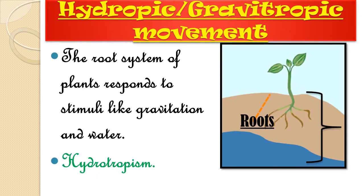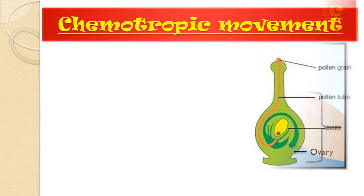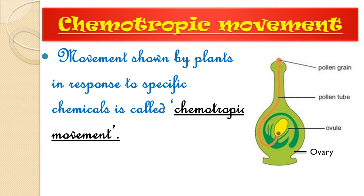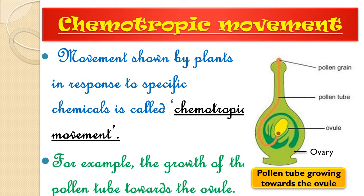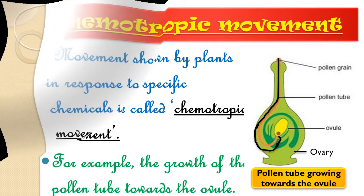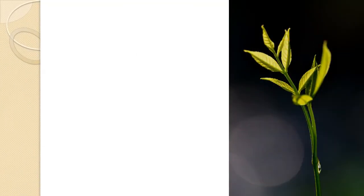Chemotropic movement is the movement shown by plants in response to a specific chemical, and it is also called chemotropism. An example is the growth of the pollen tube towards the ovule. As you can observe, this is a structure of a carpel in which the pollen grain grows towards the ovule — that is an example of chemotropism.